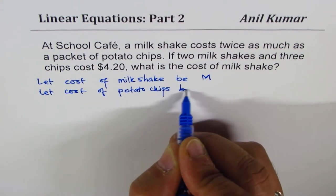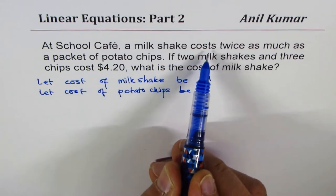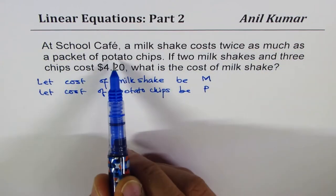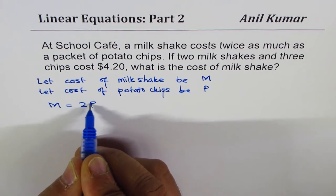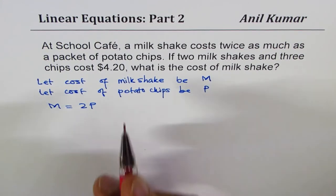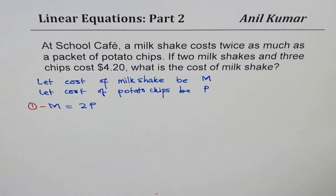A milkshake costs twice as much as potato chips, so milkshake is two times P. We get one equation: M = 2P. Let's number this equation 1.